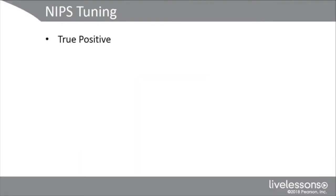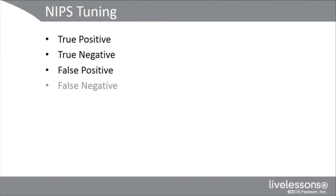Let's talk about tuning — true positives, true negatives, false positives, and false negatives. Remember that positive means an action was taken, negative means an action was not taken, true means accurate or correct, and false means an error. A true positive means the security control — like an IPS sensor — acted as a consequence of malicious activity. It was accurate. A true negative means the security control did not act because there was no malicious activity. Both represent normal and optimal operation — that's what we want.